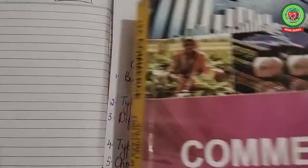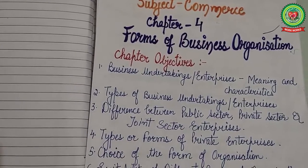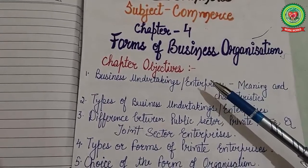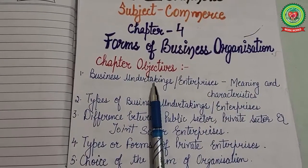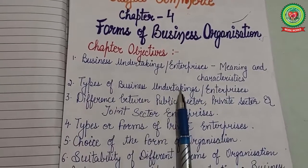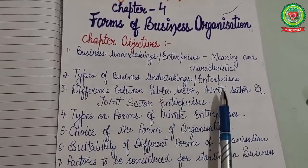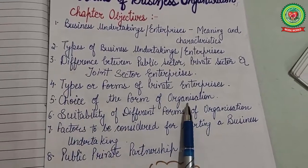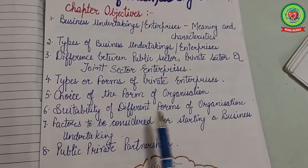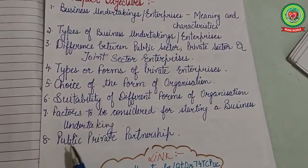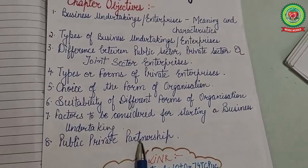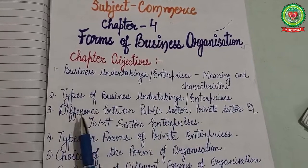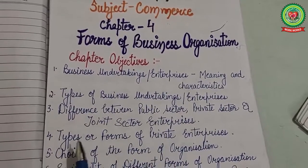Hello students, hope you are well and working hard to achieve your goals. Today we will start Chapter 4: Forms of Business Organization. The learning objectives are to understand the concept of business undertakings, its meaning and characteristics, types of business undertakings, difference between public sector, private sector and joint sector enterprises, types or forms of private enterprises, choice and suitability of different forms of organization, factors to be considered for starting a business undertaking, and public-private partnership.